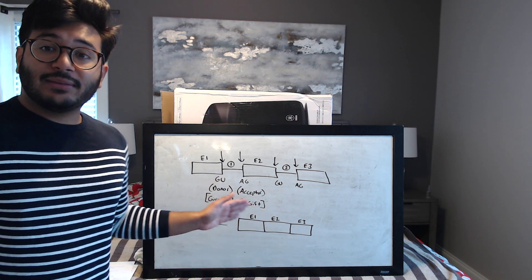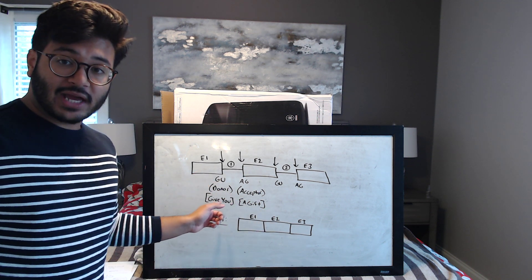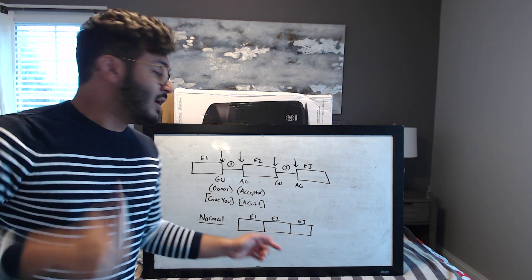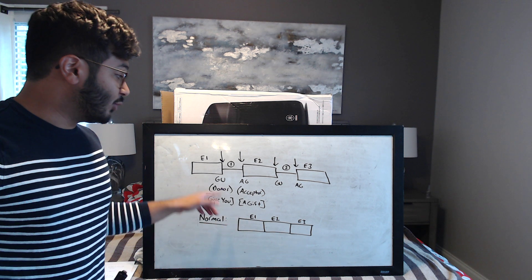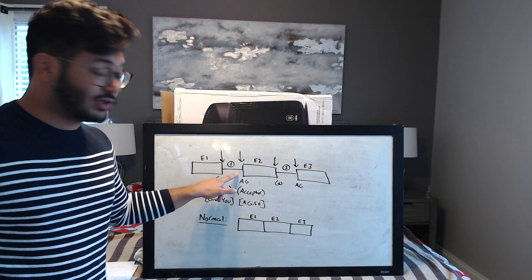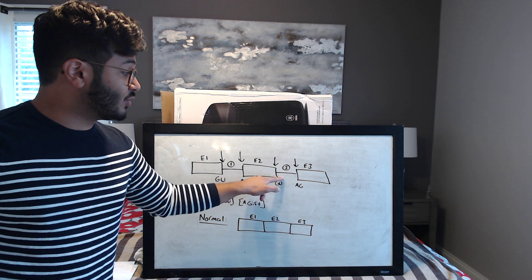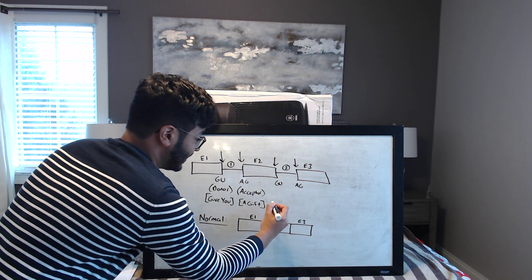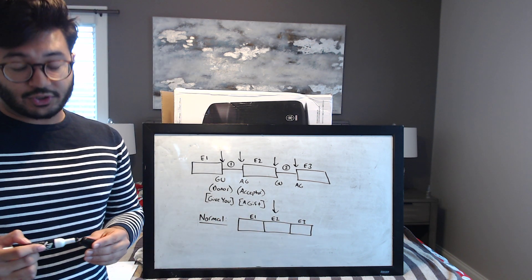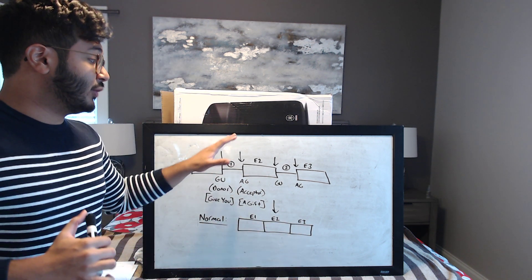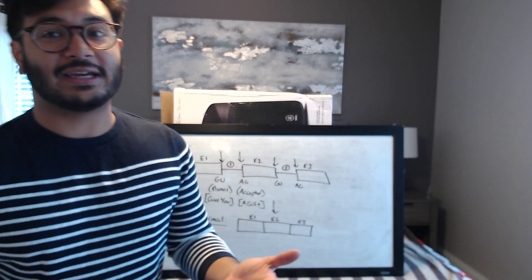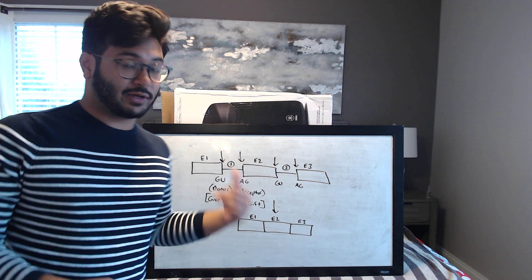Anything between the donor and the acceptor site is going to be spliced out — you get rid of it. You take out the portion between donor and acceptor for intron one, and the portion between donor and acceptor for intron two. You're left with the remaining sequence — that is the normal result.